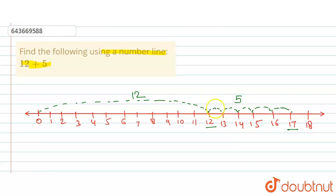So 12 plus 5, this represents the number 17. That means this can be written as 12 plus 5 is equal to 17. So that means this is the final answer for this question.